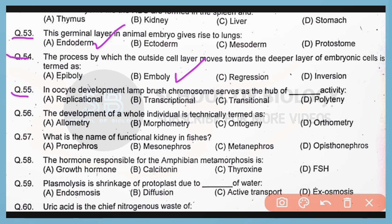Question number 55. In oocyte development, lampbrush chromosome serves as a hub of transcriptional activity. So correct answer is option B.